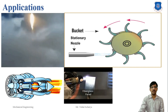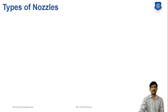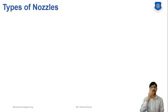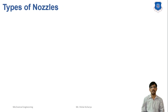Next topic is the types of nozzle. There are three types of nozzle available: first is the convergent, second is the divergent, and third is the convergent-divergent nozzle. The nozzle type is totally dependent upon the flow condition and area.